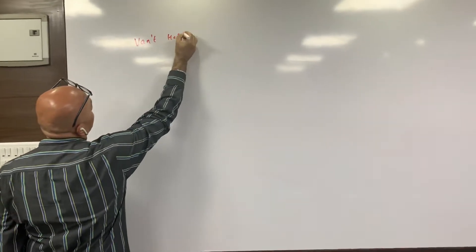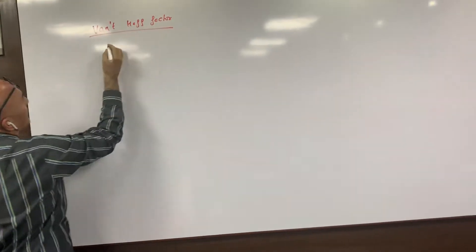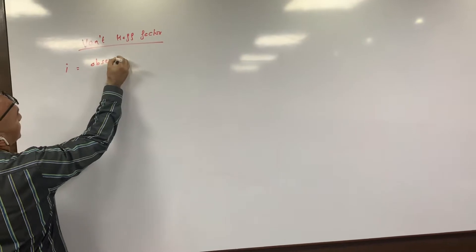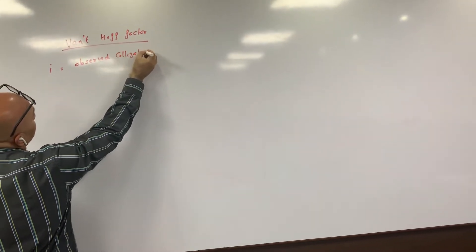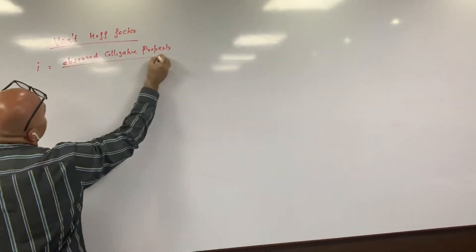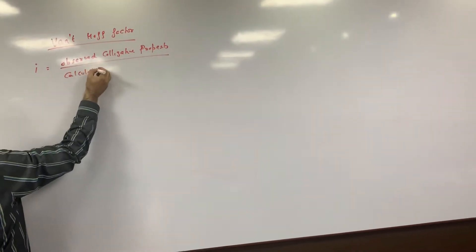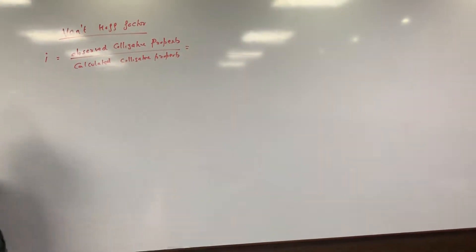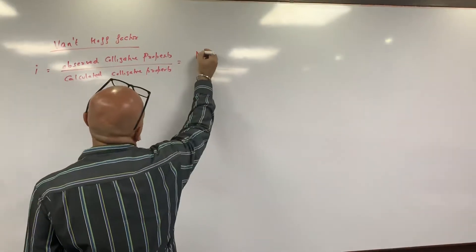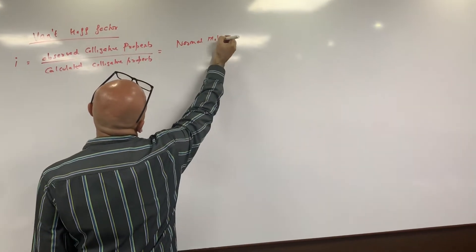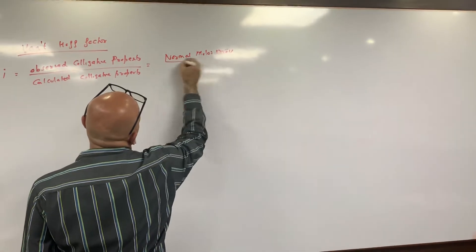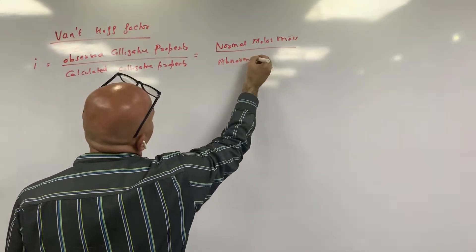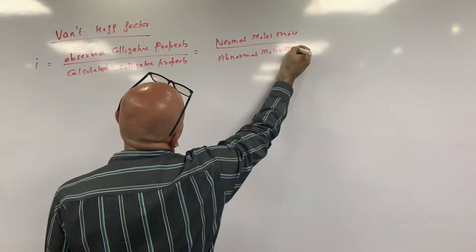So we defined the Van't Hoff factor in the last class. We defined i as equal to observed colligative property divided by calculated colligative property, which is equal to normal molar mass divided by abnormal molar mass. This is what we defined.